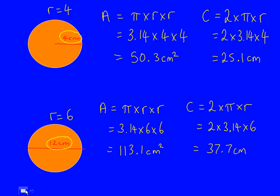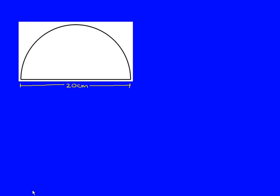There are two simple examples of circles. Now we'll do a slightly harder one. Here we have a semicircle, or half a circle, and the question we're going to start with is finding the area of this semicircle.